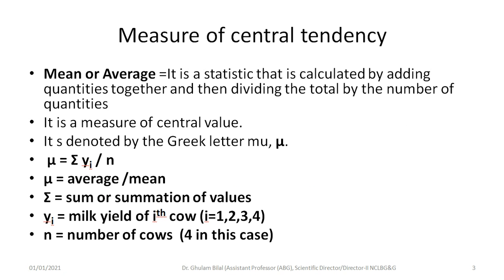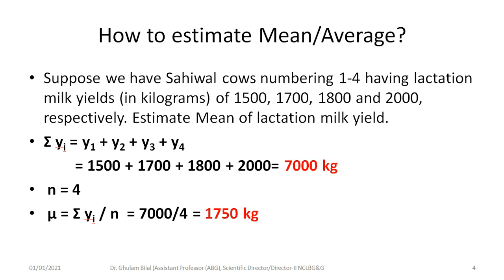First is mean. It is a statistic calculated by adding the quantities together and then dividing by their number. It is a measure of central value because mean pushes everything towards the center. It is denoted by the Greek letter mu. The formula is: mu equals sigma yi divided by n, where mu is the average or mean, sigma is the summation of values, yi is the milk yield of the i-th cow, and n is the number of cows.